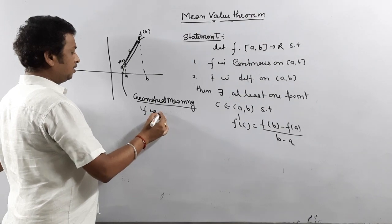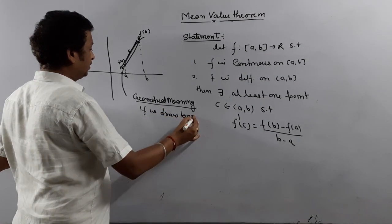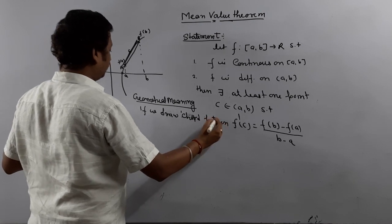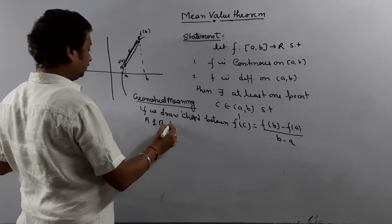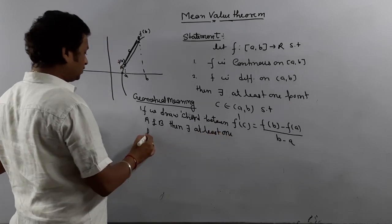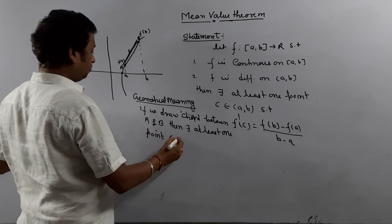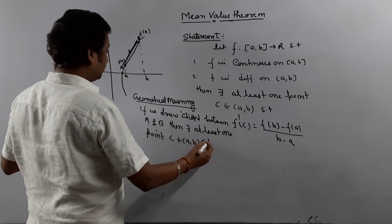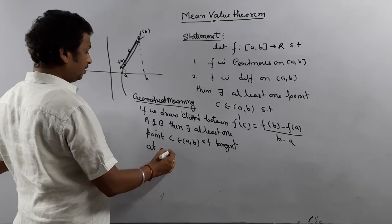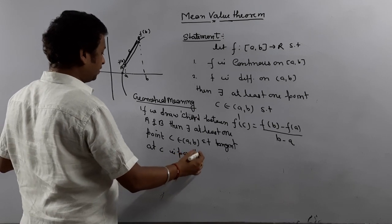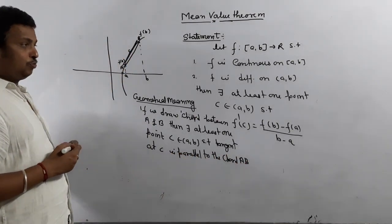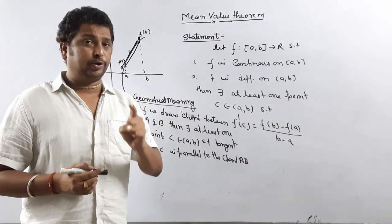Geometrical meaning: if we draw a chord between a and b, then there is at least one point c in (a, b) such that the tangent at c is parallel to the chord AB.